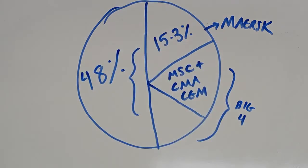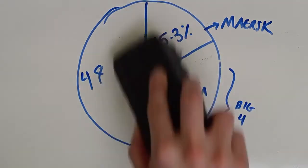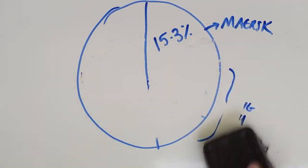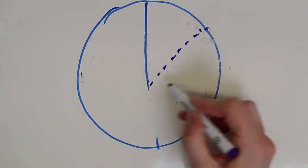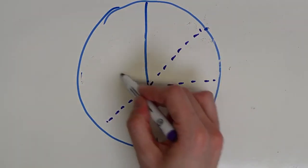Including Hapag Lloyd and Evergreen, the top five control 48% of the market, up from 37% in 2005, a trend that is unlikely to end soon.